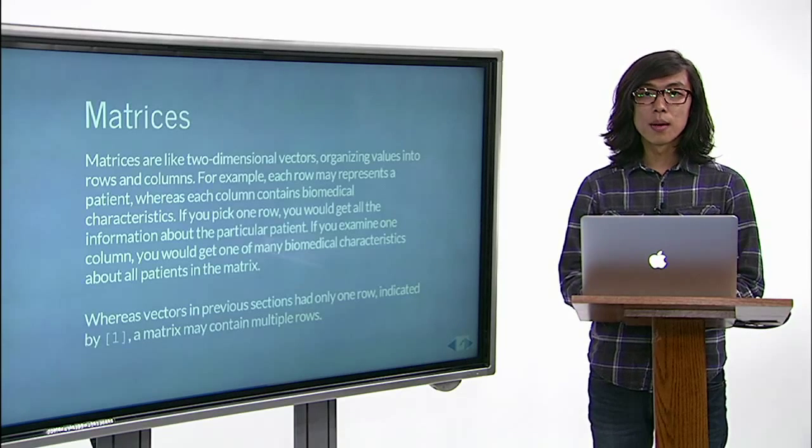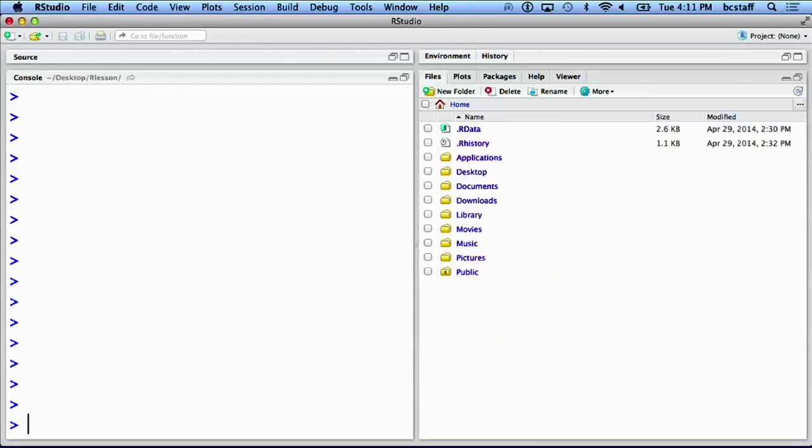You can also perform matrix multiplication. Let's create m2. Here, the new matrix m2 is a matrix with the number of rows being 3.